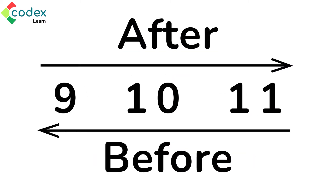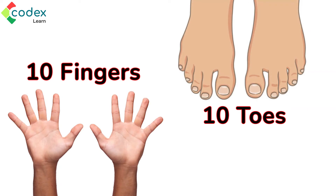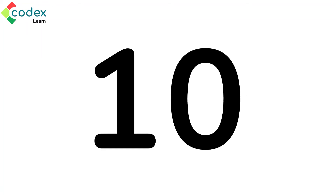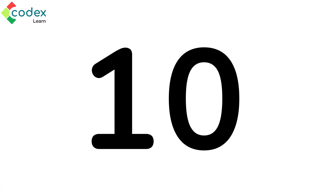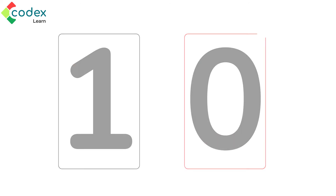10 is the number that is after 9 and before 11. Most people have 10 fingers and 10 toes. 10 is also the first and smallest number with 2 digits. Can you see that 2 numbers make up the number 10? The 2 numbers that make up the number 10 are 1 and 0.